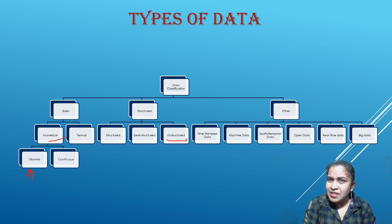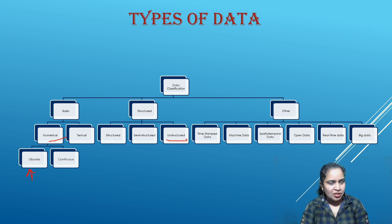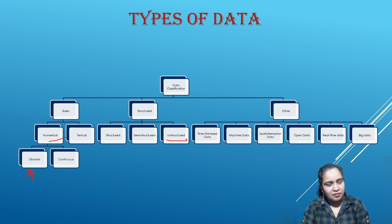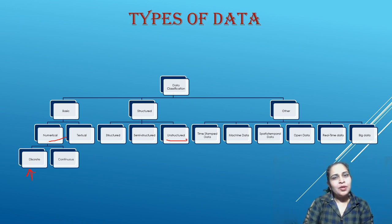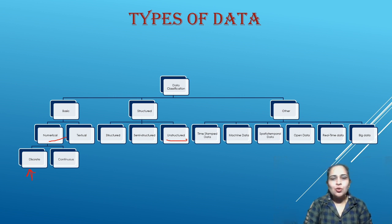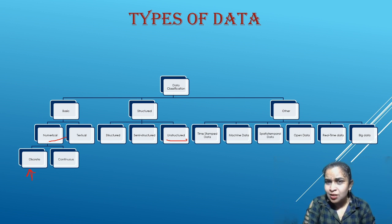An example of machine data is the biometric punching system in schools. When teachers punch in, the date and time of entry and exit are recorded. At the end of the month, salary is calculated based on this data. If a teacher does not come to school, the punching will not be done, they will be marked absent, and salary will be deducted for that day. This type of data generated by machines is called machine data.